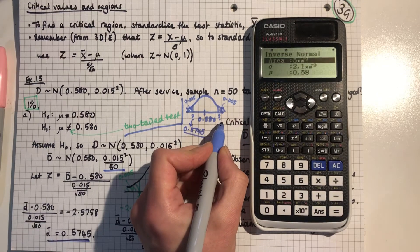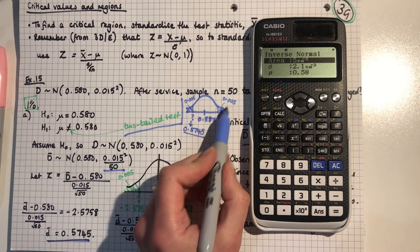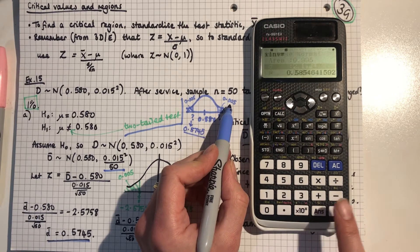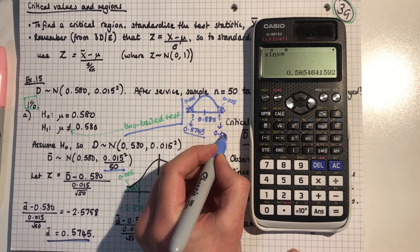Let's do the same at the upper end, but this time don't forget it's the area less than. So it's 1 minus 0.005, so 0.995. Keeping the same parameters and that gives me 0.5855.